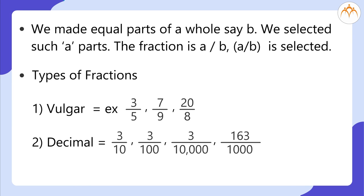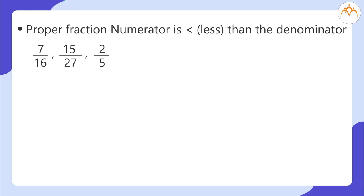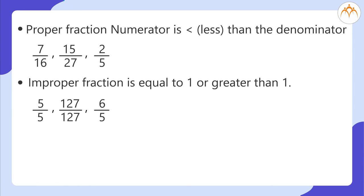Decimal fractions have denominators of 10, 100, or 1000 — examples: 3/10, 3/100, 163/1000. Proper fractions have numerator less than denominator — examples: 7/16, 15/27, 2/5. Improper fractions are equal to or greater than 1 — examples: 5/5, 127/127, 6/5.